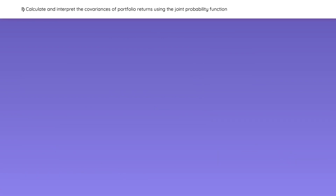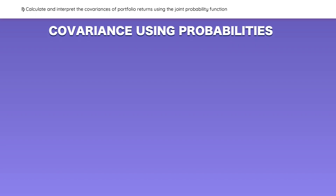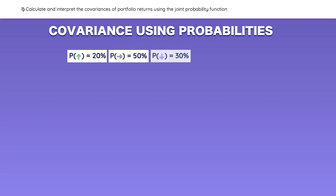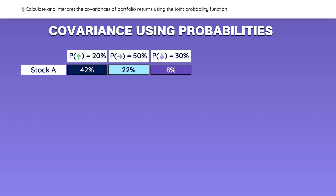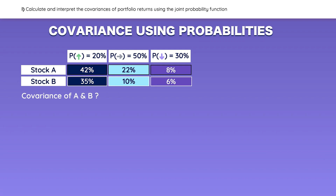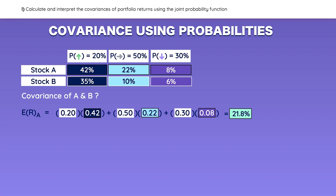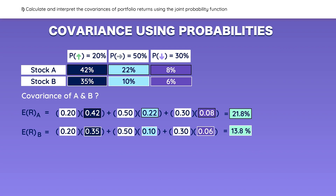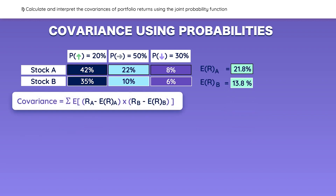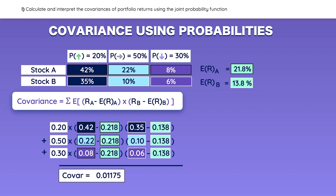Earlier in this reading, we calculated covariances using historical values, but how do you calculate covariance when there are probabilities involved? For example: there is a 20% chance of a good economic cycle, 50% chance of a neutral one, and 30% chance of a bad one. Here are the expected returns for stock A and stock B under each scenario. The first step is to find the expected return for stock B, which is also the weighted average of its returns. Then use the covariance formula, plugging in the values to find the covariance between stocks A and B.